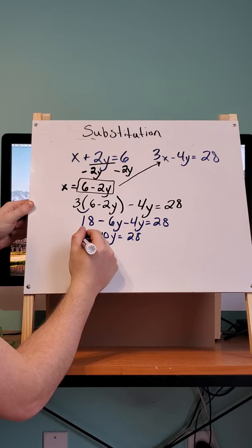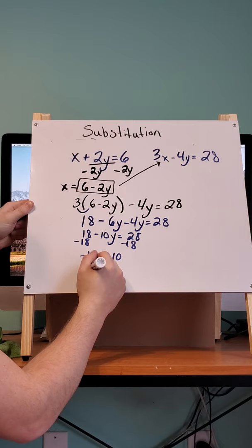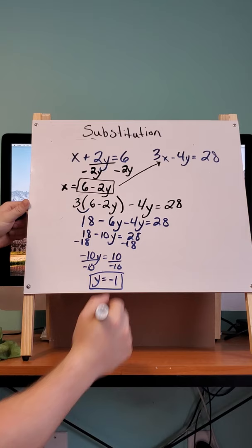Move 18 to the other side. Negative 10y equals 10. Divide by negative 10. We get y equals negative 1.